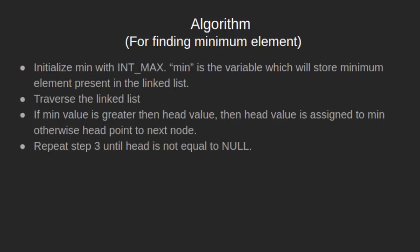Now let's see the algorithm to find the minimum element. We initialize min with INT_MAX — min is the variable that will store the minimum element in the linked list. We traverse the given linked list and if the min value is greater than the head node value, then the head value is assigned to min, otherwise head points to the next node. We repeat this step until head is not equal to null.